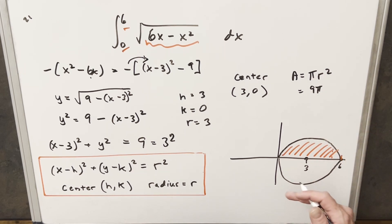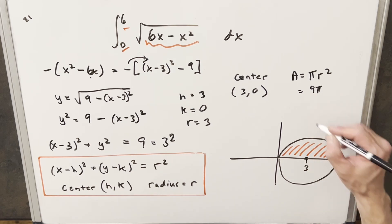So since we only want the semicircle, we want the area above the x-axis, the area is going to be just half of this. So our final solution is going to be just 9 pi over 2.